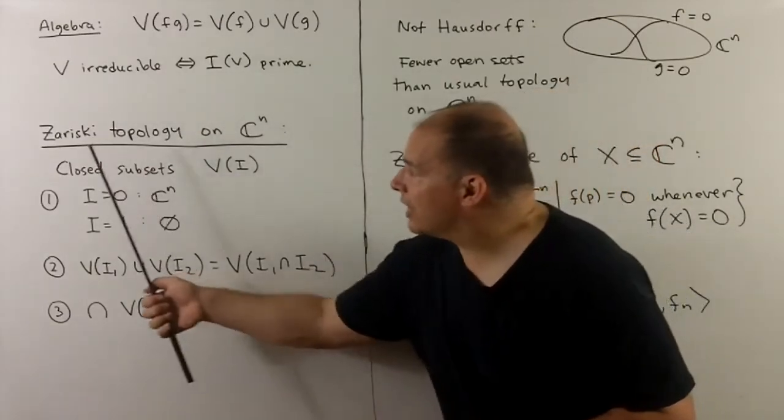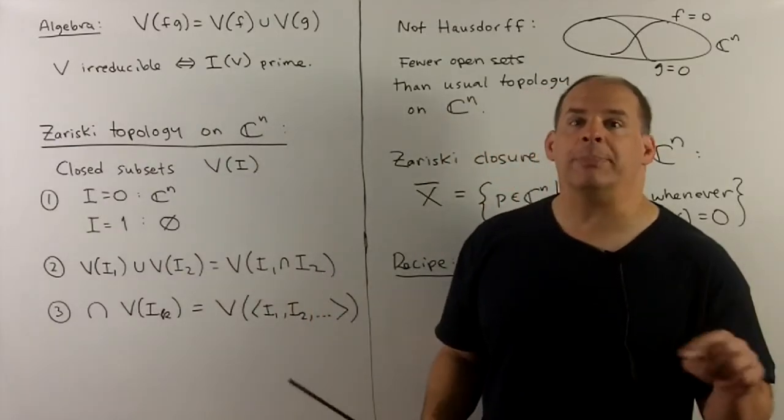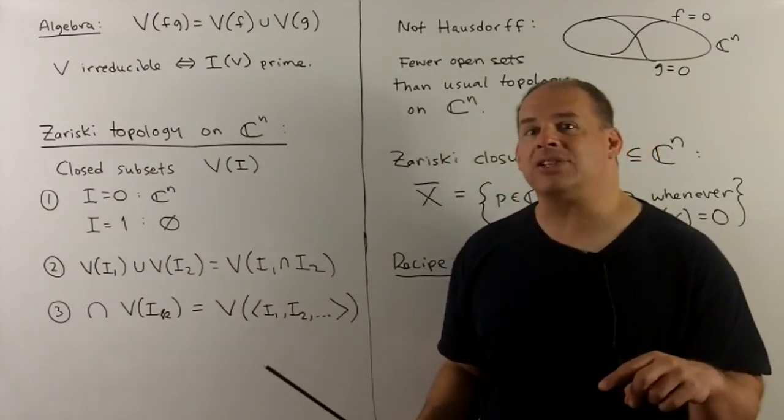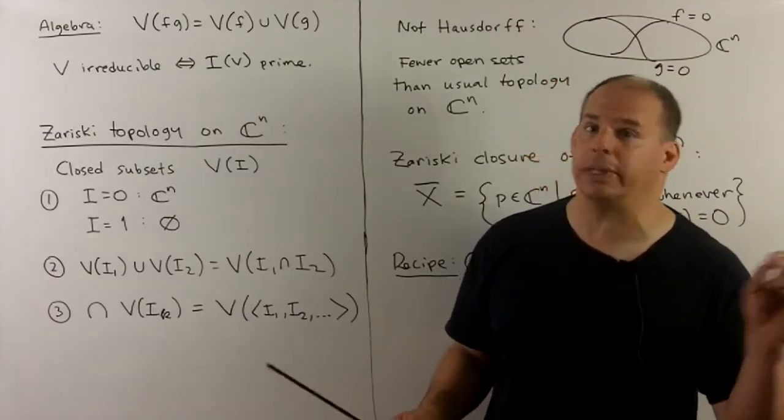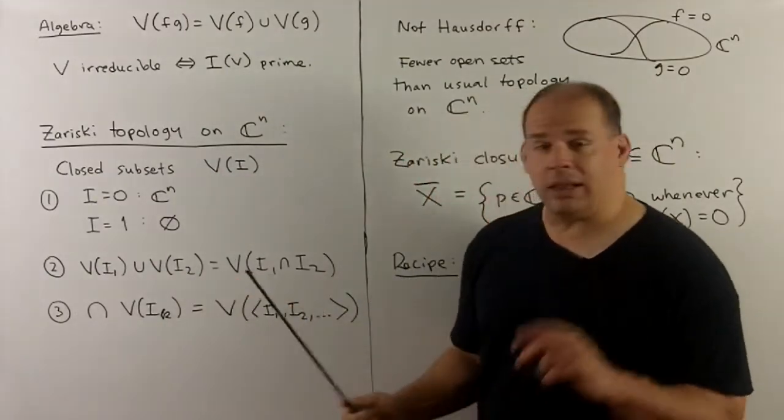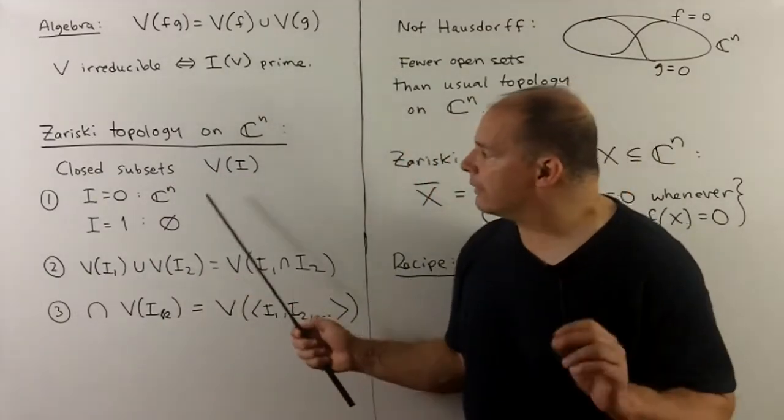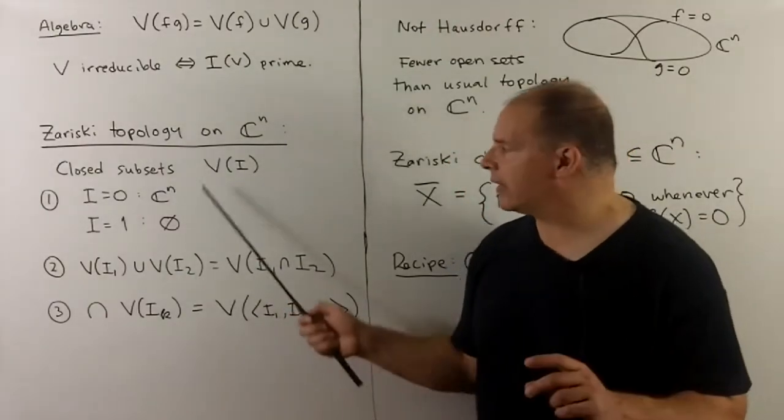Now, we're going to consider the Zariski topology on CN. This is going to be built out of using varieties as closed subsets. So we've got to think of topology in terms of closed subsets. So what do we need? Well, three properties. I'll leave it to you to show them. First we would want the empty set and our space in the topology. That's not difficult to see.